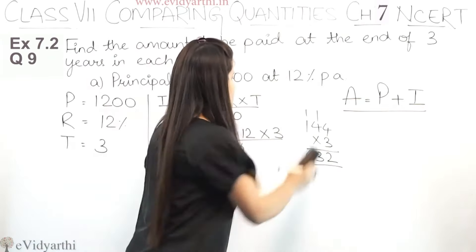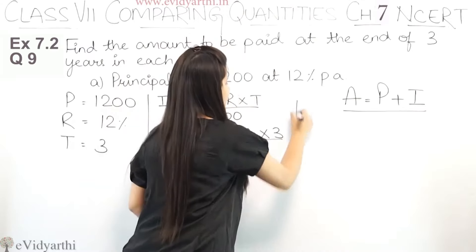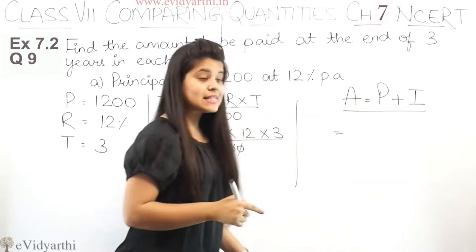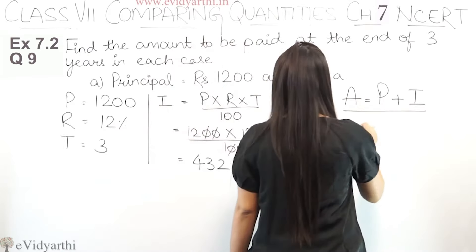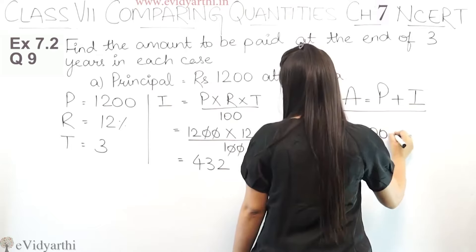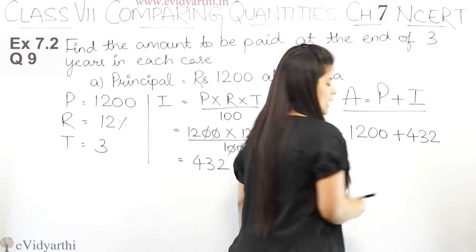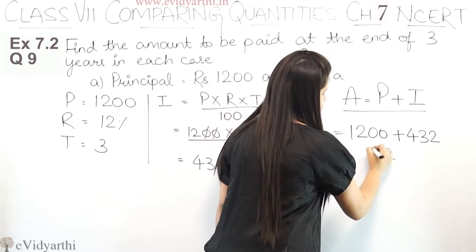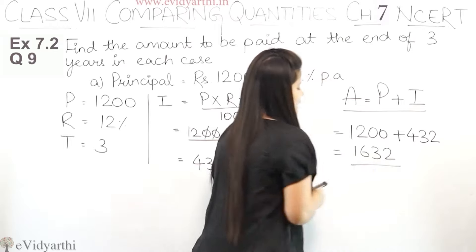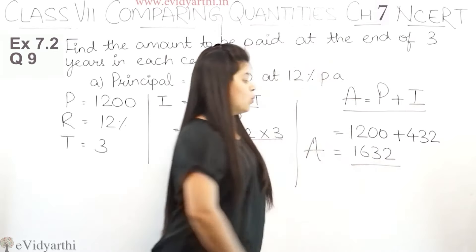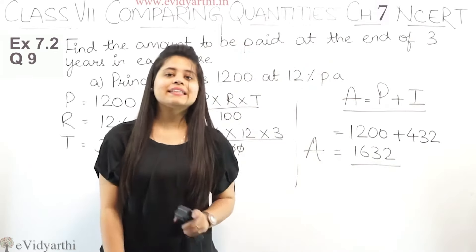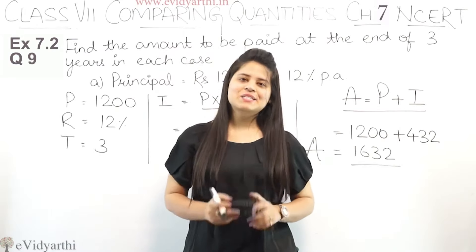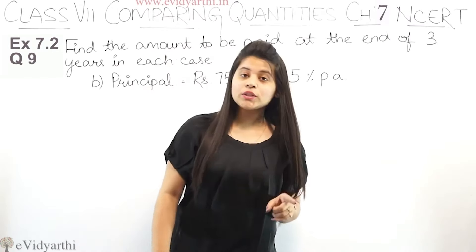Now 432 is not the amount but interest. Interest find kia hai humne. Now we have to find amount. So amount equals to principal plus interest. Principal is 1200 plus interest is 432. So adding this, we get amount to be 1632.